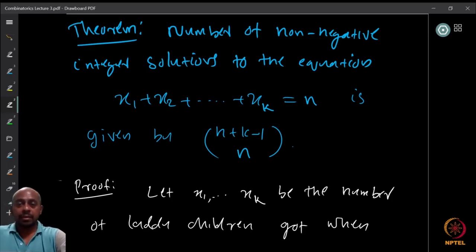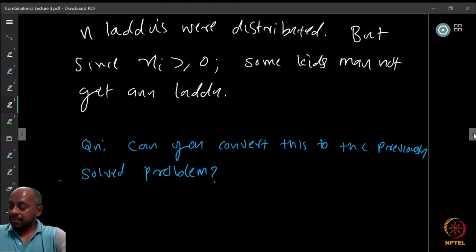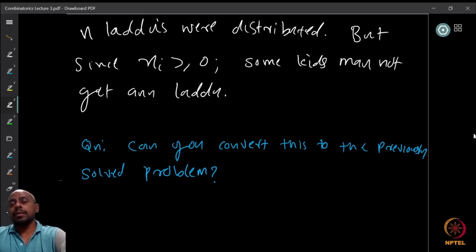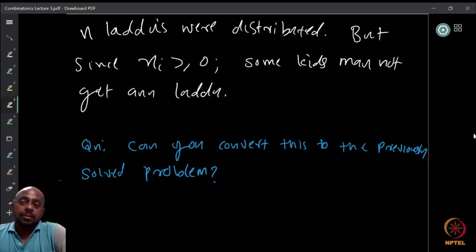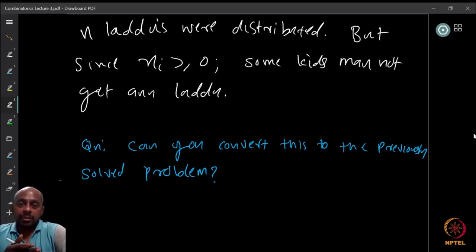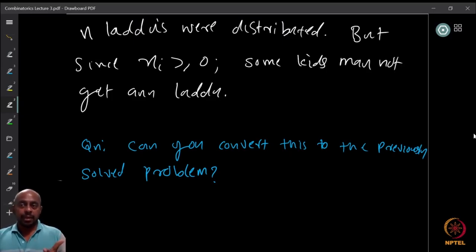Some of the x_i's can be zero — when the distributor is unfair. Can you convert this into the previously solved problem? In mathematics, the best approach is to reduce a new problem to an already solved one. So how do you convert this unfair distribution into a fair distribution question?